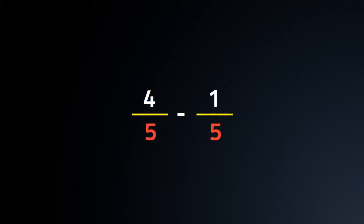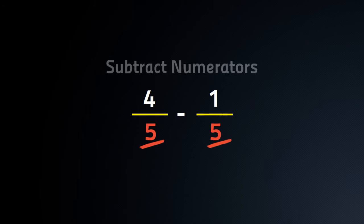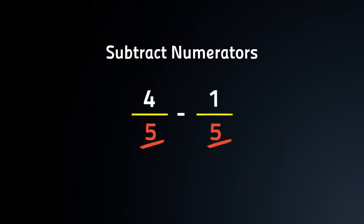Let us take another example. We have 4 by 5 and we have to subtract 1 by 5 from it. As we can see, denominators of 4 by 5 and 1 by 5 are same. In this type of problem, we subtract numerators and keep denominators same.